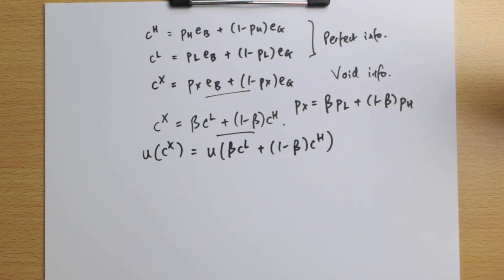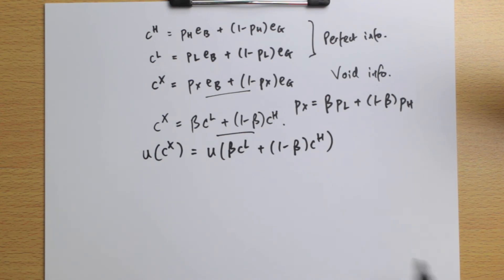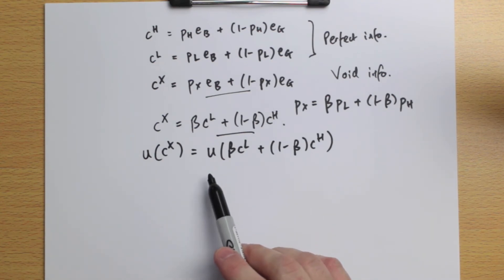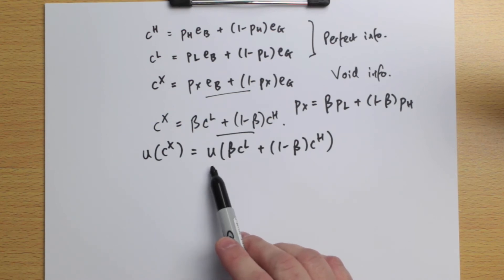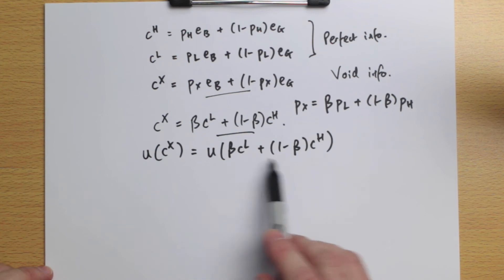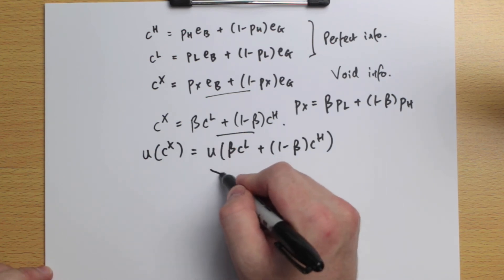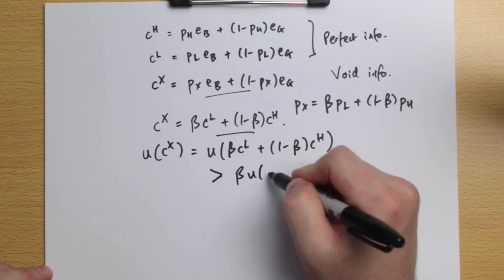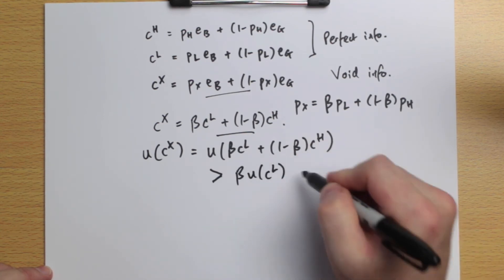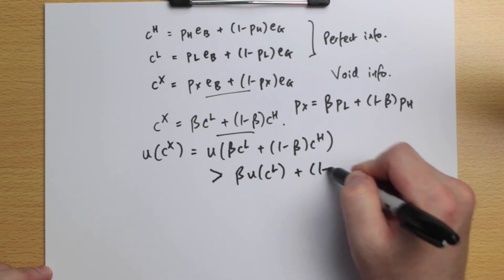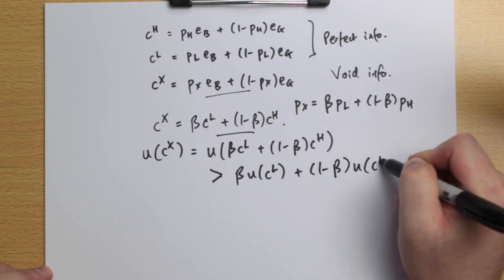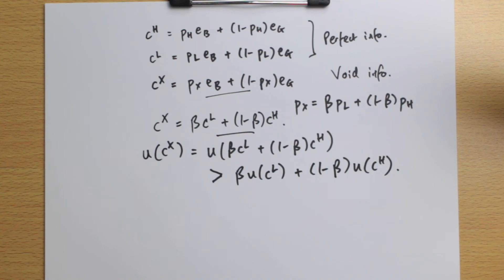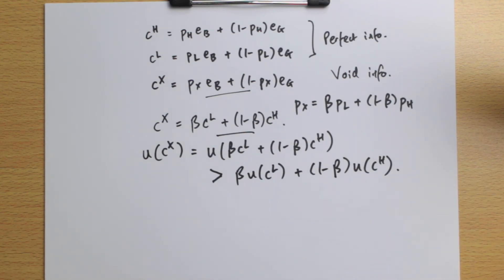Our consumers are strictly risk-averse, meaning the utility function is strictly concave. Therefore, by Jensen's inequality, the utility of beta·CL plus 1-minus-beta·CH is strictly greater than beta times the utility of CL plus 1-minus-beta times the utility of CH. That is a basic mathematical fact from the strict concavity of the utility function.